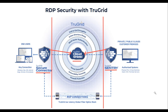In order to log in, end-users install the requisite version of TrueGrid Secure Connector for their device. During login, Cloud Shield verifies the end-user MFA before asking Sentry to process the end-user login and password. This important authentication flow protects Active Directory from brute force attacks, password stuffing, and other vulnerabilities. It makes it virtually impossible for stolen AD credentials to be used against systems protected by TrueGrid.